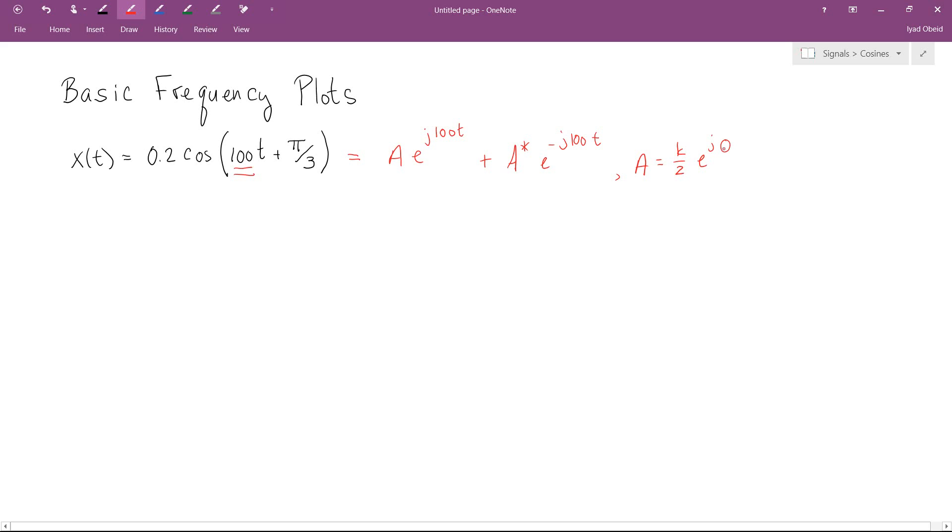That is a complex number, or we'll call it j theta. Okay, so in this case, we have our k is equal to 0.2, and our theta is equal to pi over 3. So that's going to give us 0.1 e to the j pi over 3.